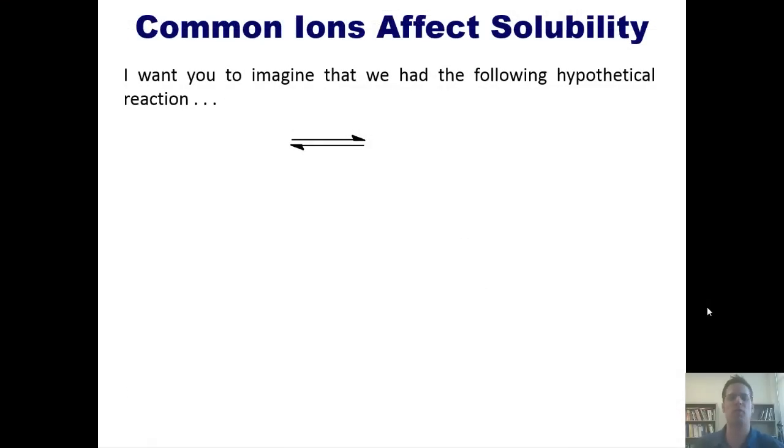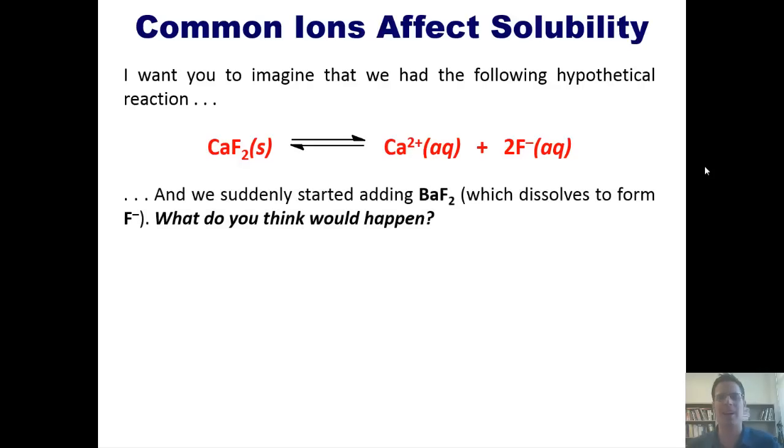I want you to imagine that we had the following hypothetical reaction: calcium fluoride solid dissociating in an equilibrium way with its respective ions calcium cation and fluoride anion. Now if you had this reaction going on, I want you to then imagine that we suddenly started adding barium fluoride, which is a compound that dissolves to form more F-. What do you think would happen?